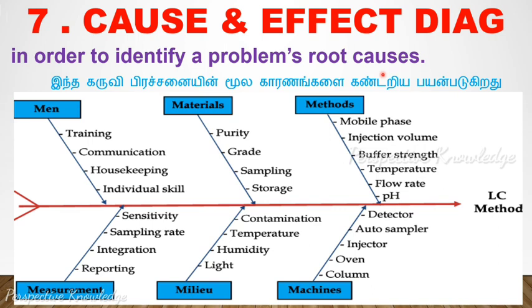This is a quality control tool. The Cause and Effect Diagram is also known as the Fishbone Diagram. The main factors used are: Man, Material, Method, Measurement, Milieu (environment), and Machines — these are the 6M factors that are mostly the source of problems.